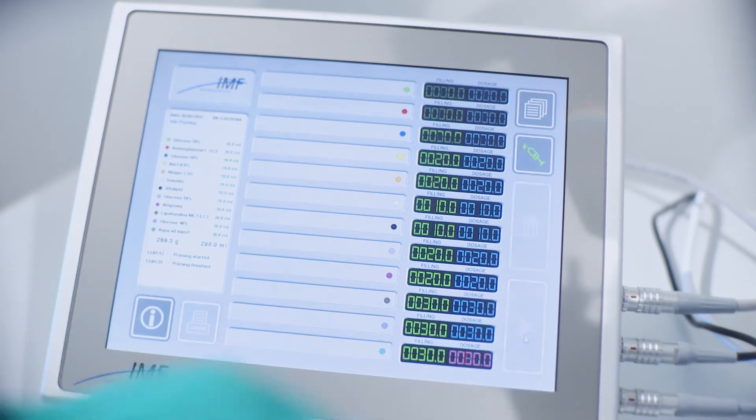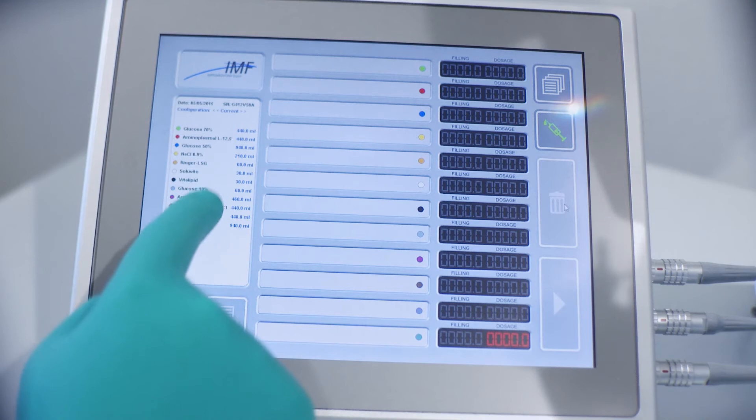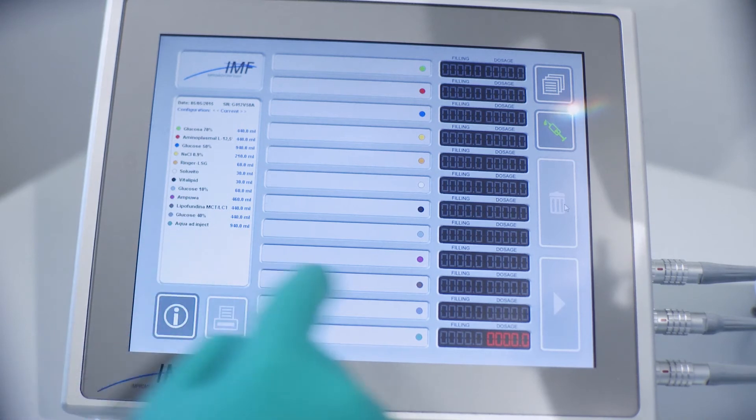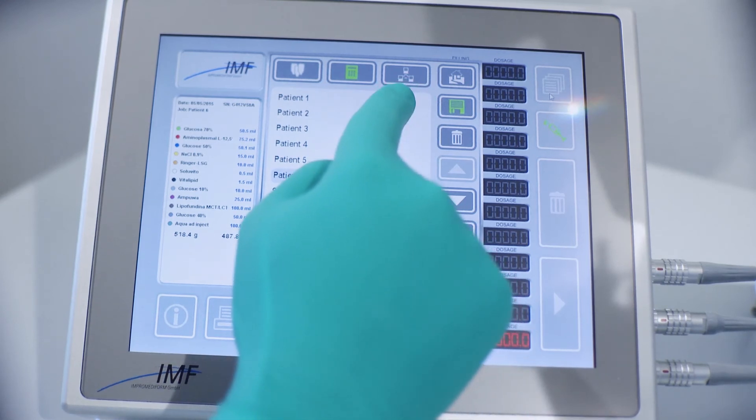Once the setup procedure is completed, the Medimix multi-compounder is ready for production. The left side of the screen will display the reminder for each ingredient. Now pressing the menu button, two new sections are available.